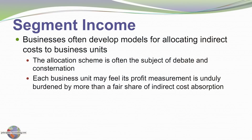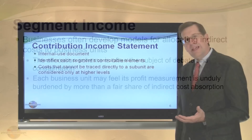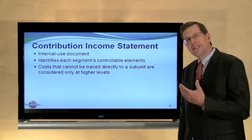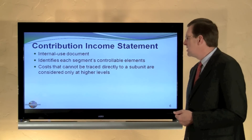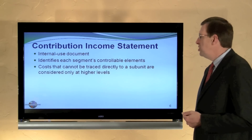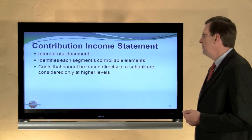Businesses often develop models for allocating indirect costs to business units. The allocation scheme can be the subject of debate and consternation, as each business unit may feel its profit measurement is unduly burdened by an unfair share of the indirect costs. Reporting of segments is often facilitated by some form of contribution income statement.